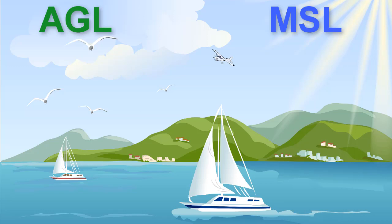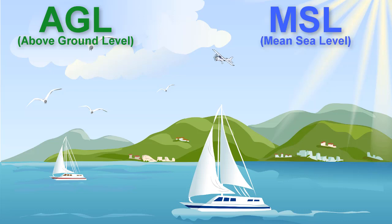When flying, you need to know the difference between AGL and MSL. AGL stands for Above Ground Level and is how many feet you are flying above the ground. MSL stands for Mean Sea Level and is how many feet you are flying above the ocean surface.